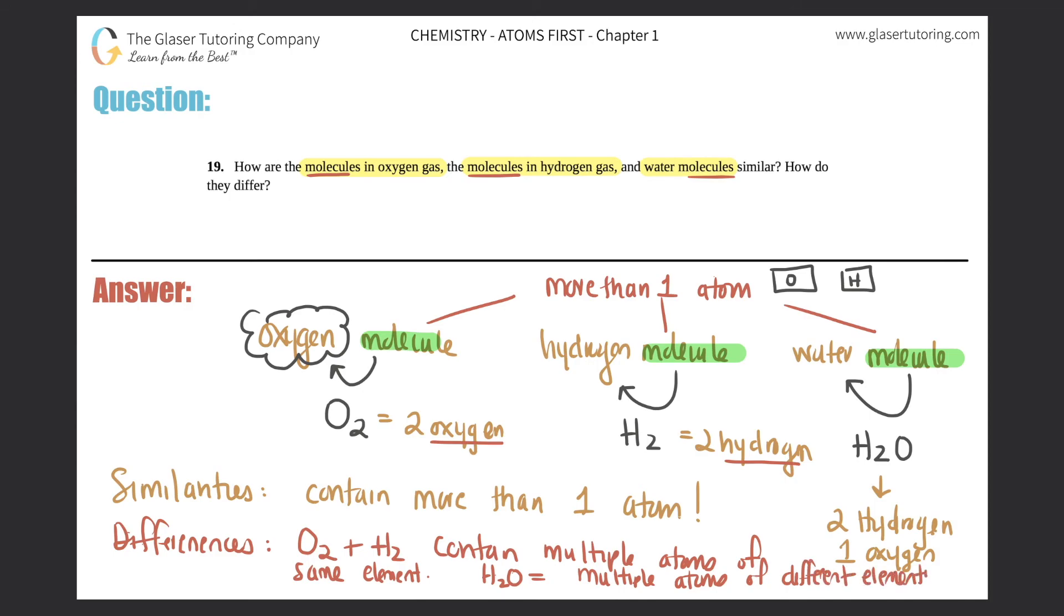So that's how they differ—it would be multiple atoms of different elements found on the periodic table. So that's their differences. The similarities is that anytime you see a molecule, it just has to be more than one atom. So there's two oxygens for O2, for H2 two hydrogens, and for H2O two hydrogens and one oxygen.